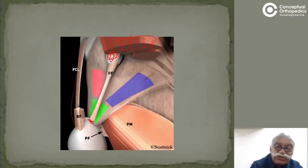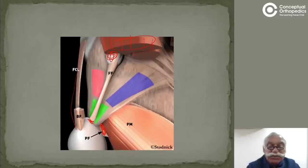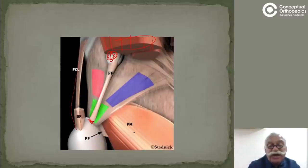This is the cut end of the popliteofibular ligament, which is on the posteromedial side of the upper end of the fibula — it has been cut and removed here. The fabellofibular ligament is visible here, overlying the popliteus when looking from behind.